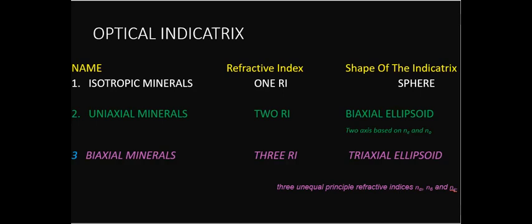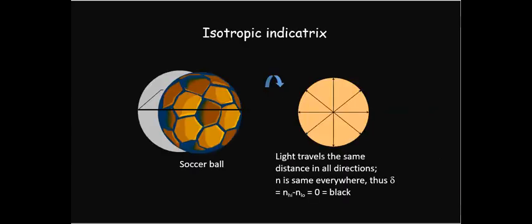Let's look at diagrams to make the concept clear. For an isotropic indicatrix with only one RI, every section through the indicatrix is a circular section, so the optic axis is perpendicular to the circular section — giving an infinite number of optic axes. Birefringence is therefore zero for isotropic minerals.